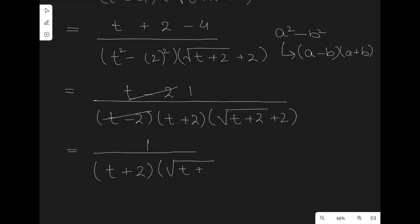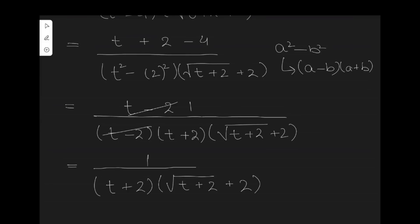So, our answer is 1 divided by (t+2) times, parenthesis opened, √(t+2) plus 2, parenthesis closed.